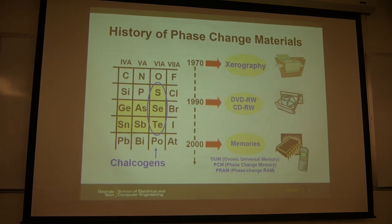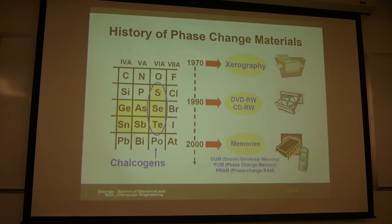The phase change material is mostly based on chalcogenide material. Chalcogenides are the elements in group six, except oxygen. So for example, sulfide, selenide, telluride — those are chalcogenides.